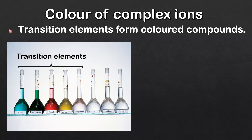A chemical property of transition elements is that they form colored compounds. Here we have a selection of compounds of the transition elements nickel, chromium, cobalt, vanadium, and manganese and as you can see they all have distinctive colors. Compounds of magnesium, sodium, and calcium are included and as you can see these form colorless compounds because they are s-block elements and they are not transition elements.